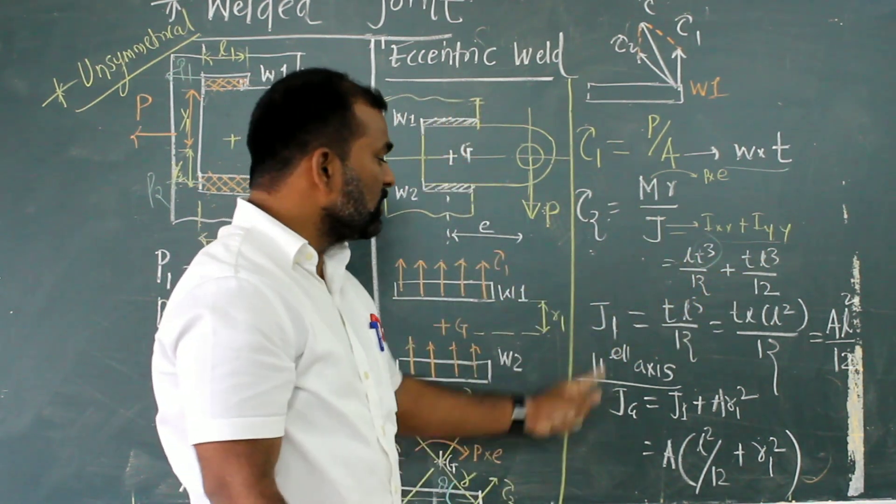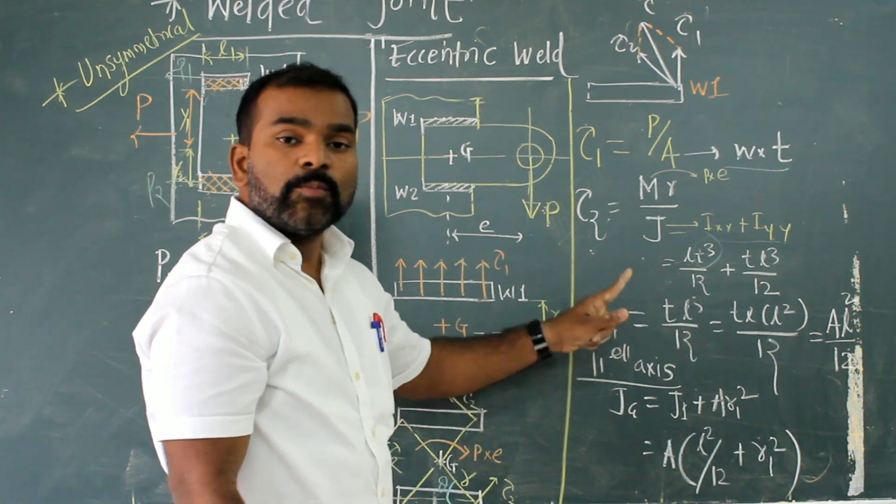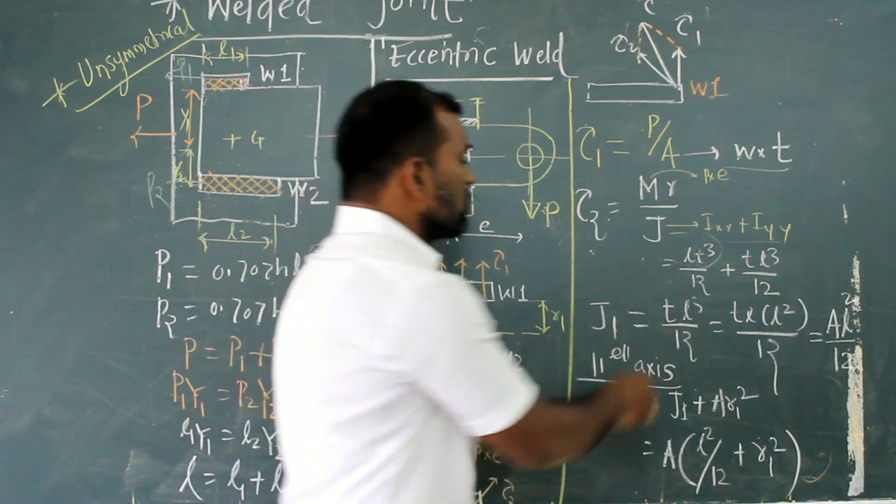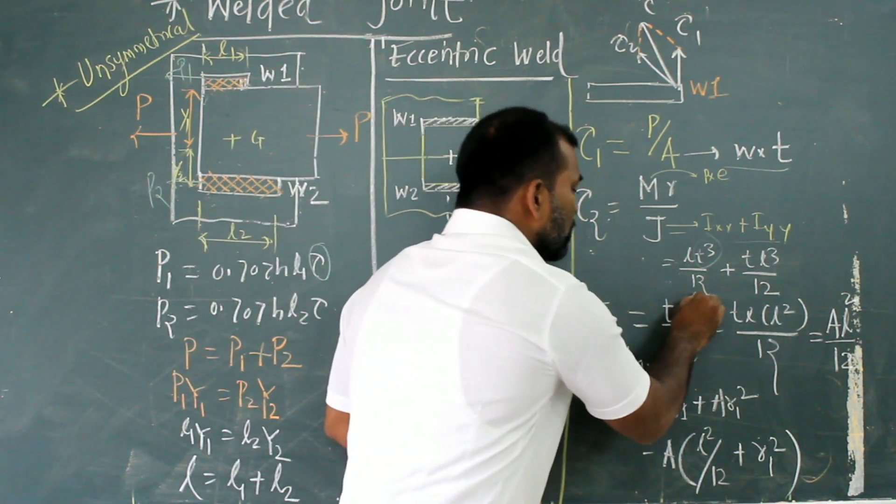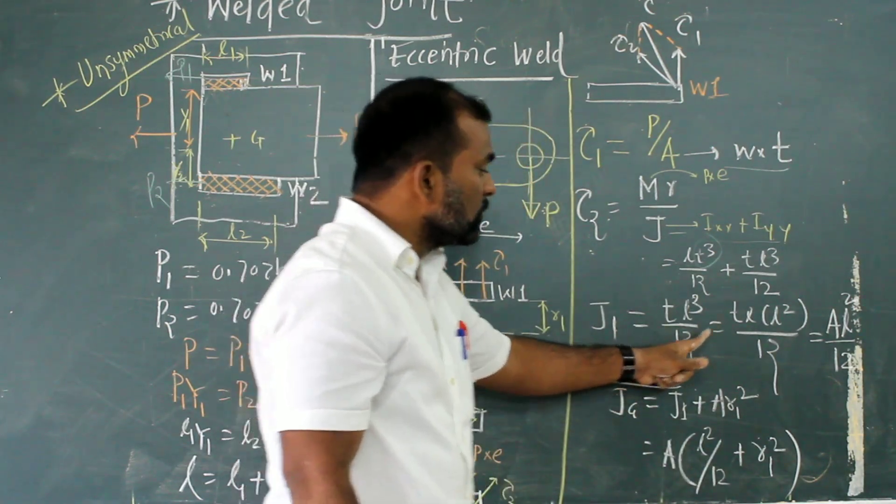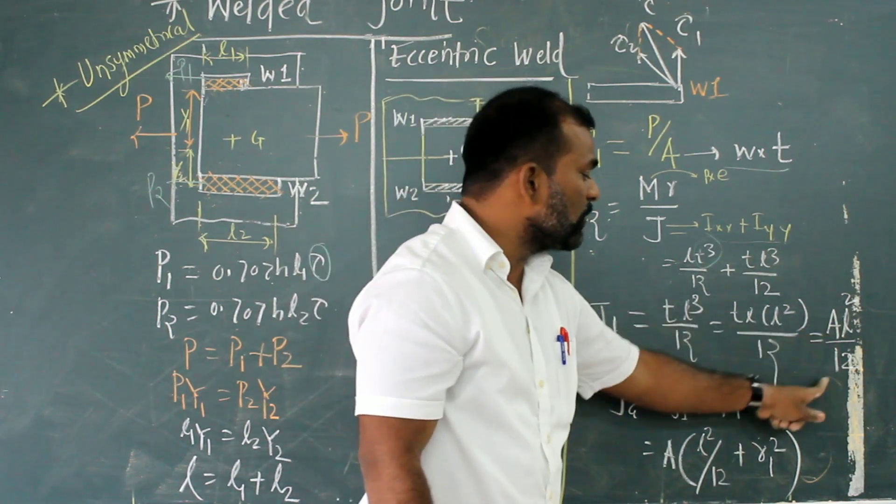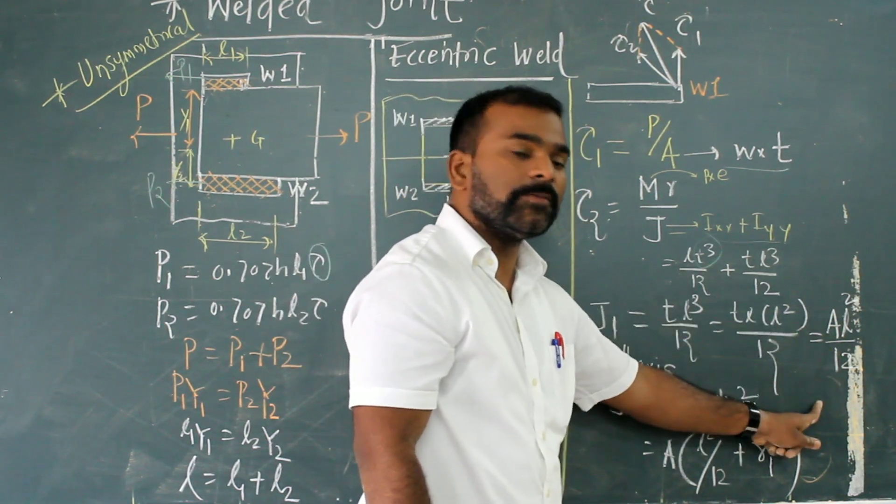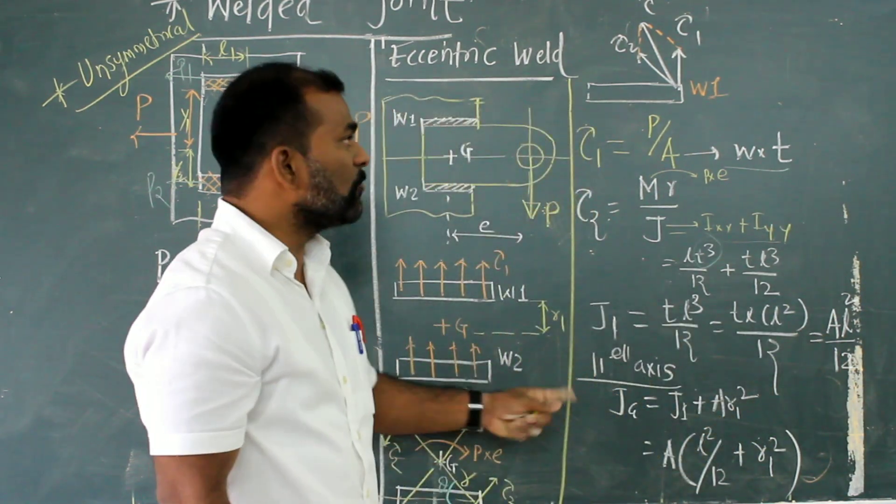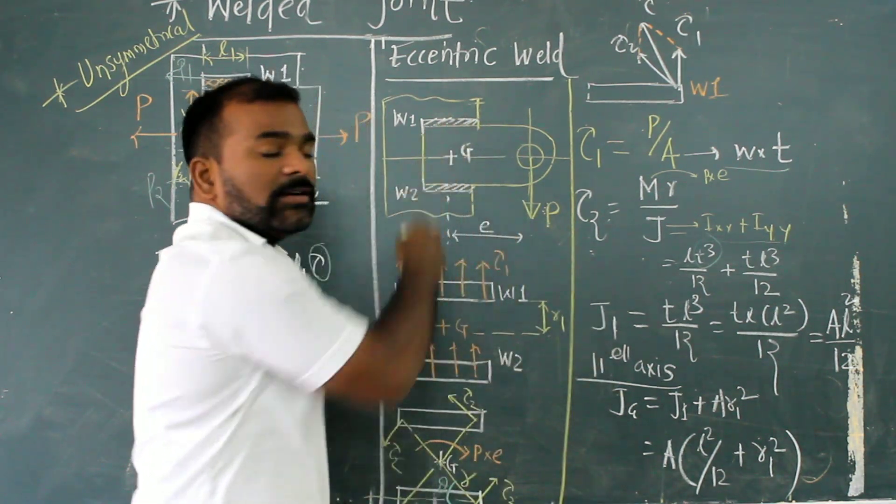I can elaborate in simplified format that J1 is equal to, that is polar moment of inertia for first weld, is equal to T L cubed by 2. So again, I simplified T L into L squared. T L is nothing but weld area times L squared divided by 12, that is A L squared divided by 12.